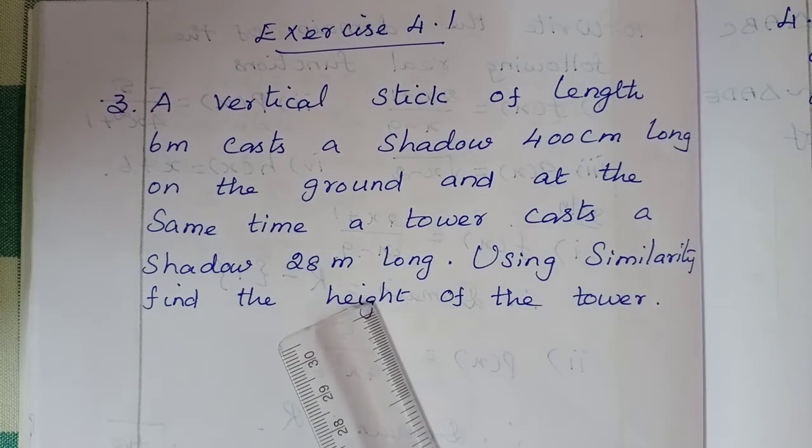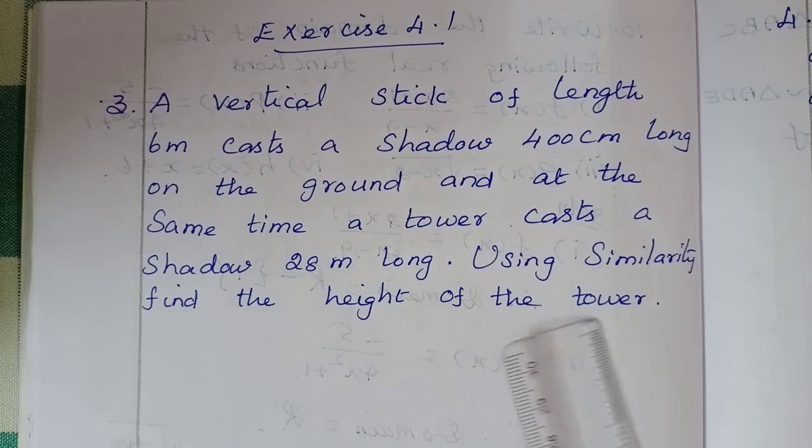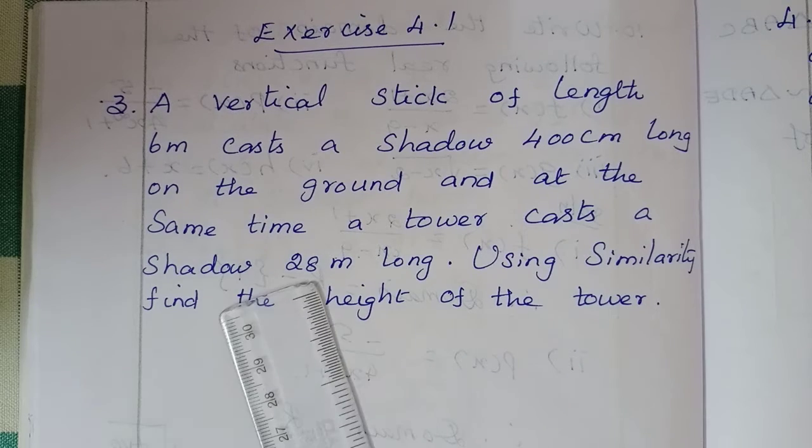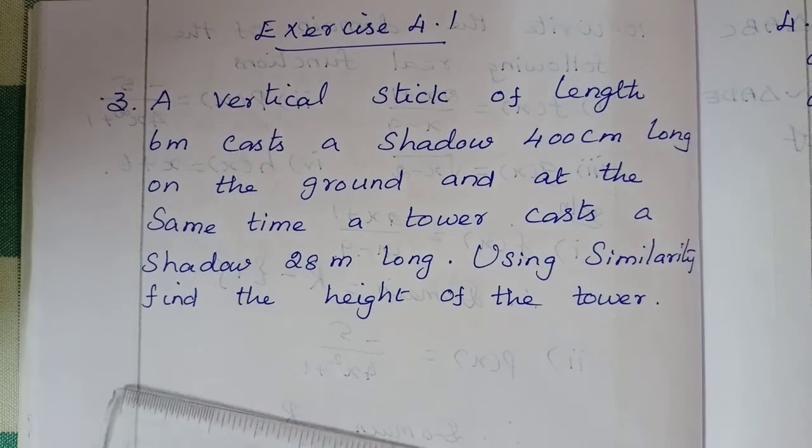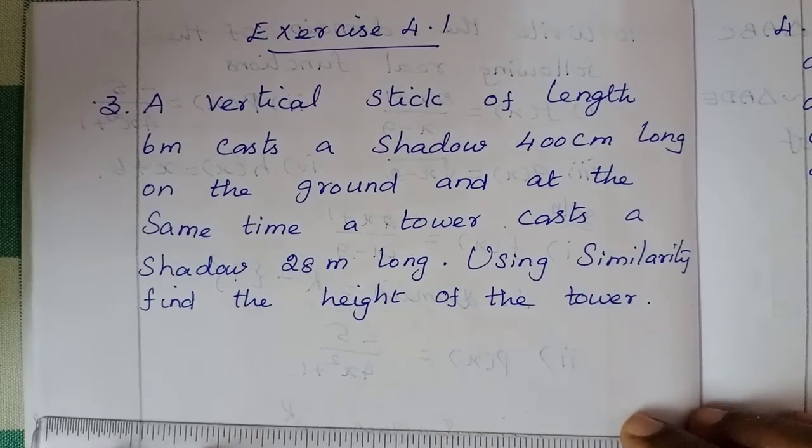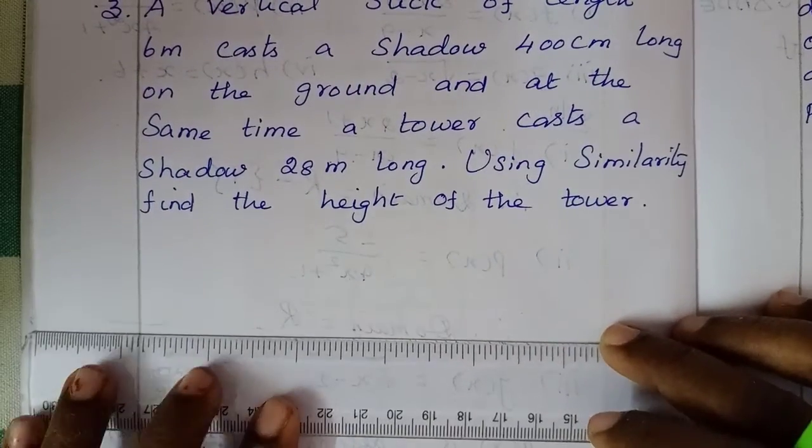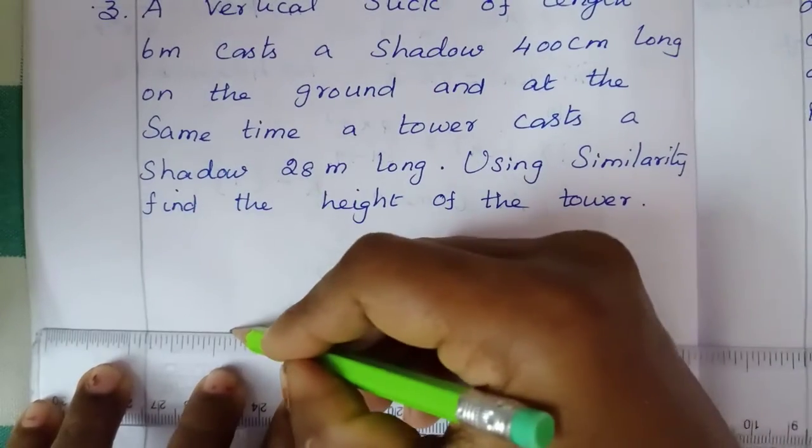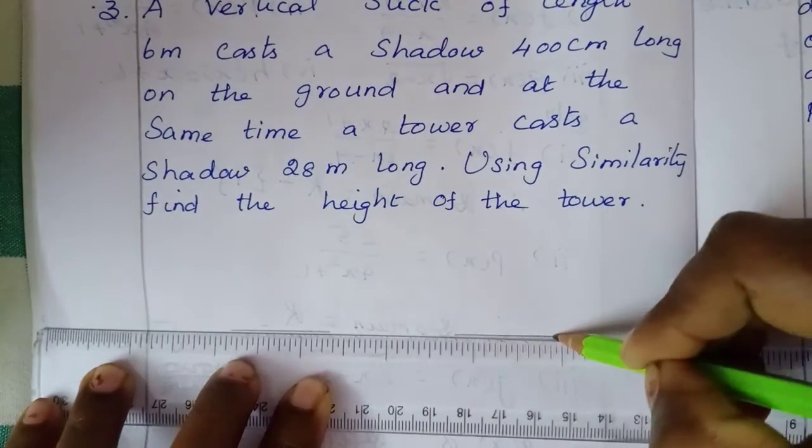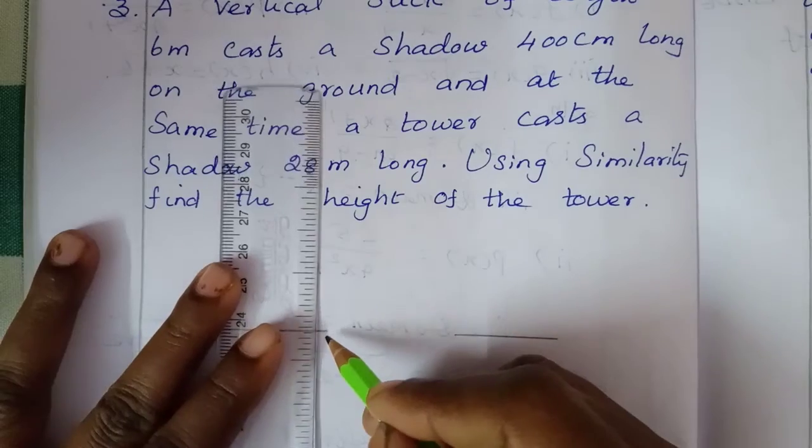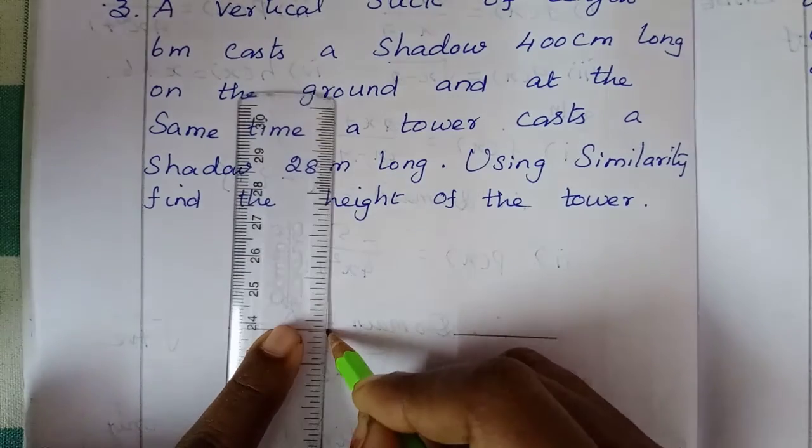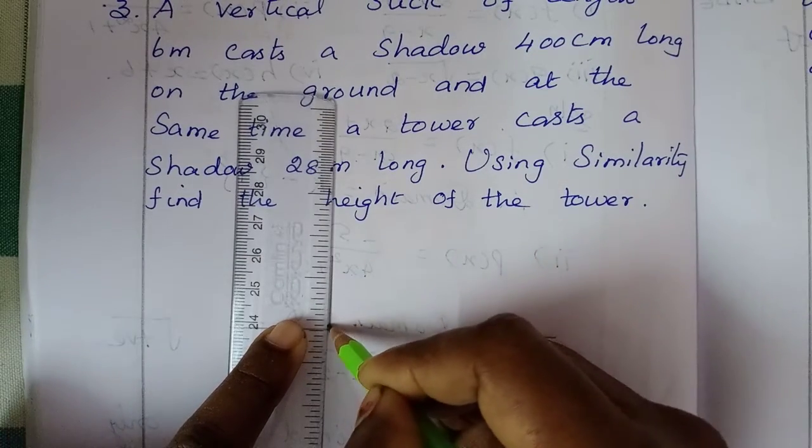...shadow 28 meter long. Using similarity, find the height of the tower. So first, stick and tower. Draw this on top, so this stick will be taken to the top.